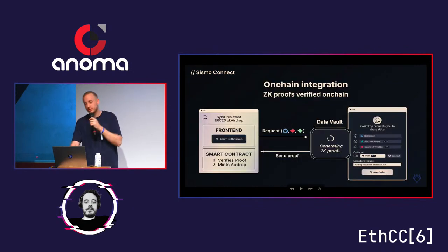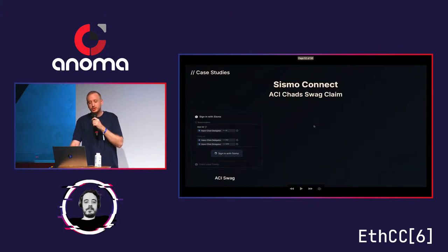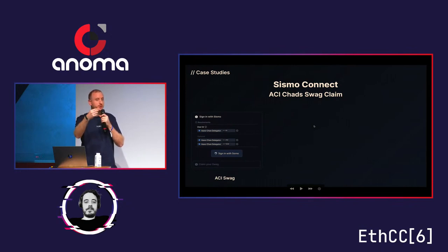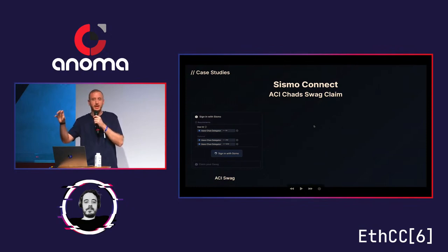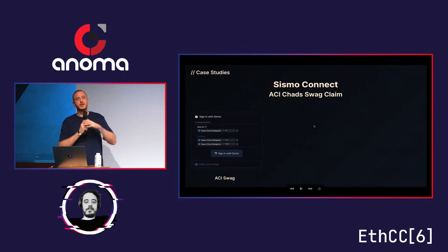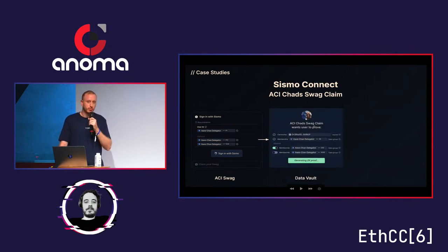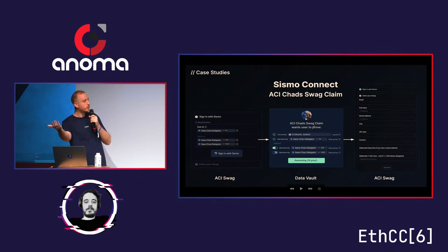You can also do this on-chain: request this data, receive a ZK proof, verify it on-chain. I'll share one case study we did with ACI — a big delegate of Aave. The app was: prove me that you delegated to me, but I don't want to know your wallet because I want to send you swag to your physical address. They didn't want a link between a physical address and the wallet that delegated a large amount of Aave. So they request the ZK proof that you delegated, you generate it as a user, they verify it, and if it's good, they give you access to a form to submit your physical address and ship the swag.